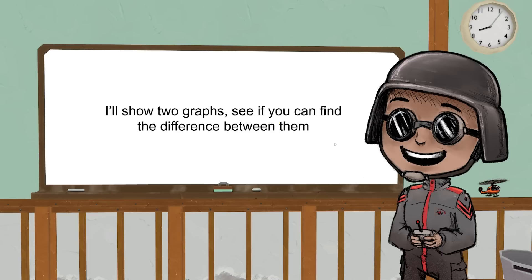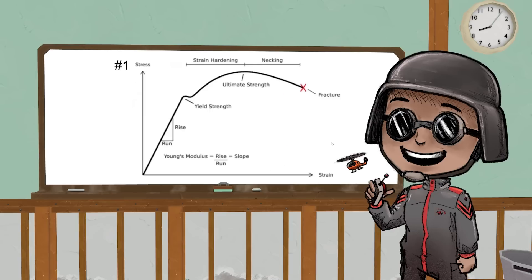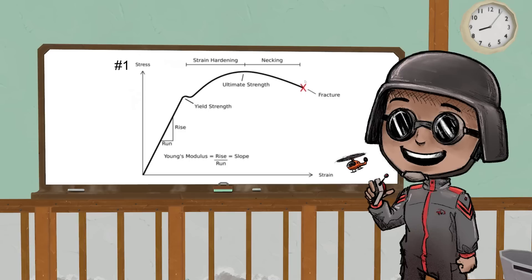This picture is unrelated. There are two graphs on the screen. See if you can find the difference. This is graph number one. You can see a nice long straight line, bit of a bump there, you get your nicely named ultimate strength, and then at the end you fracture.